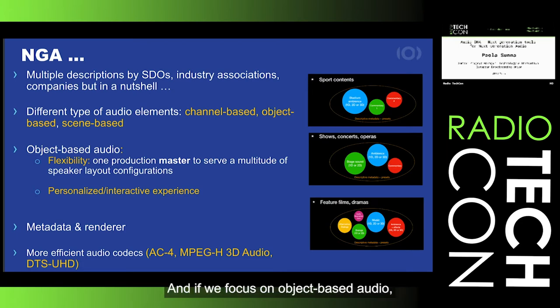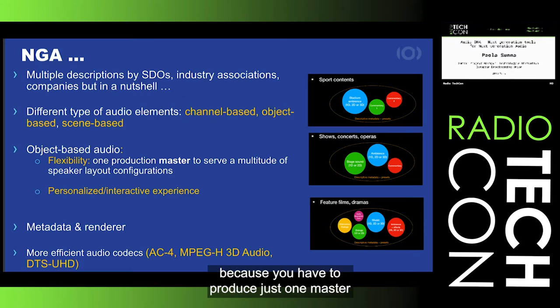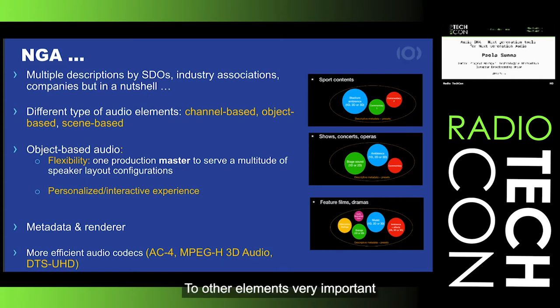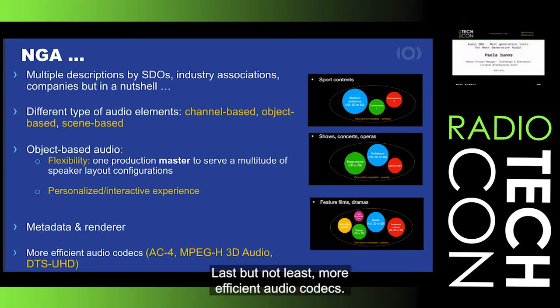If we focus on object-based audio — which could be, for example, different commentaries, stage sound, and so forth — you get a lot of flexibility because you have to produce just one master and then you can serve a multitude of speaker layout configurations, while also providing end users with a personalized immersive interactive experience. Two other important elements for next generation audio are metadata to describe the audio scene and the renderer. Last but not least, more efficient audio codecs.